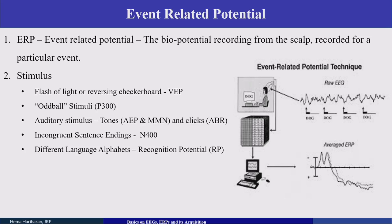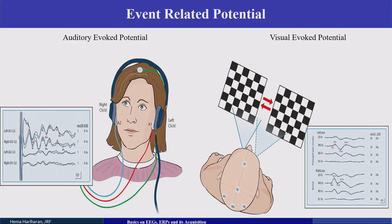For auditory evoked potentials, auditory tones are delivered through headphones, earphones, or speakers. Electrodes are connected, continuous EEG data is recorded along with triggers, and all trigger channels are averaged together to obtain the auditory evoked potential ERP.